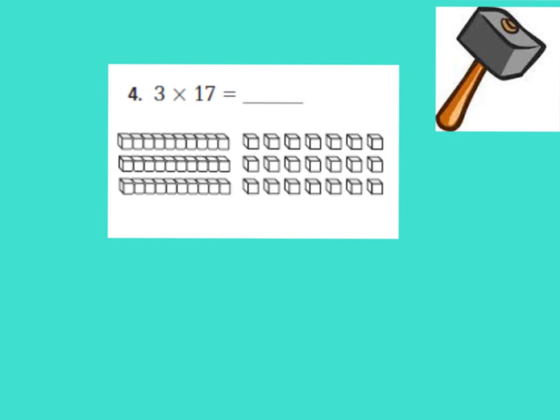We're going to break it up into place values, and we're going to say that the 1 is worth 10, and the 7 is worth 7 ones. Now, this model here that we have is showing 3 groups of 10.